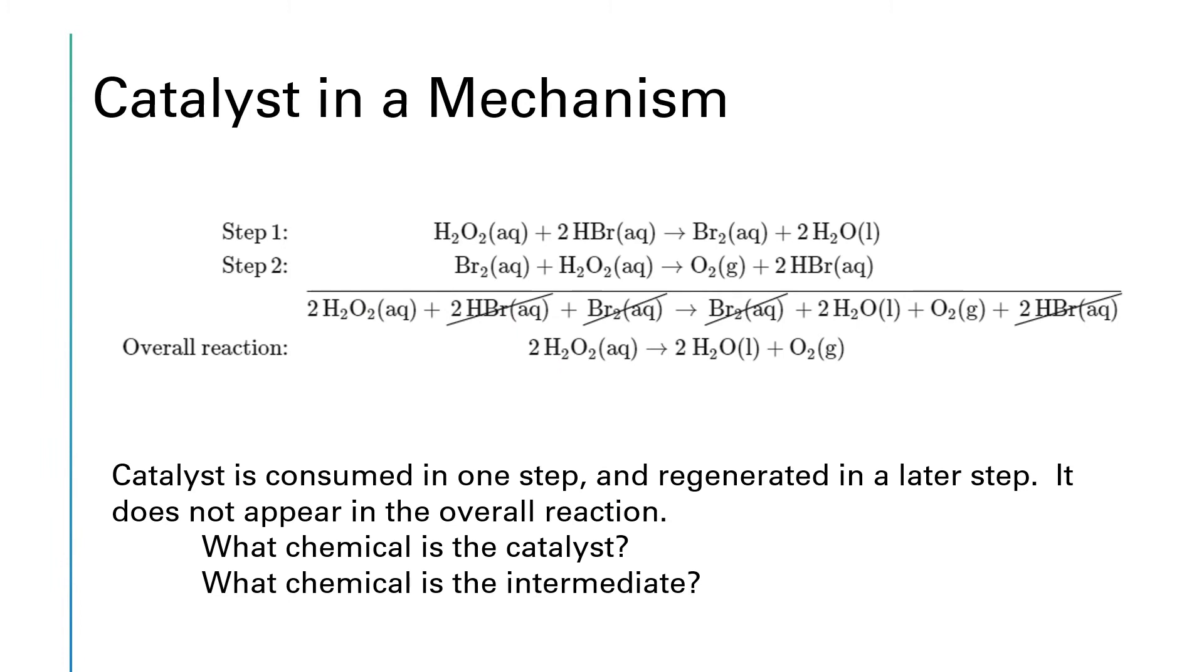When we look at a mechanism, we can identify the catalyst because it's something that gets added to the reaction. So it will first appear as a reactant, but then after it gets consumed in that step, it'll be regenerated in a later step, so it'll appear on the product side somewhere later. Since it appears on both the reactant side and the product side in different steps of this mechanism, it'll cancel out and will not appear in the overall reaction.